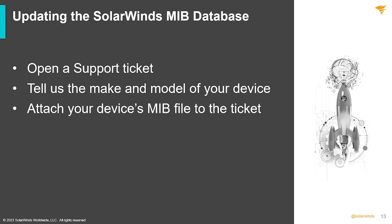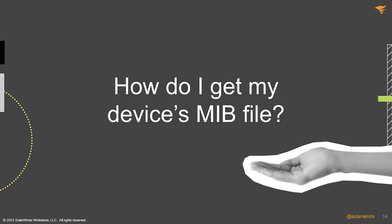You can then go to the customer portal, download the MIB file, and update as we've seen in the previous video. But how do you get the device's MIB file? An SNMP walk of the device in question will provide the MIB file you need. We have seen in the previous video a screenshot of a MIB file — now let's try to obtain one.